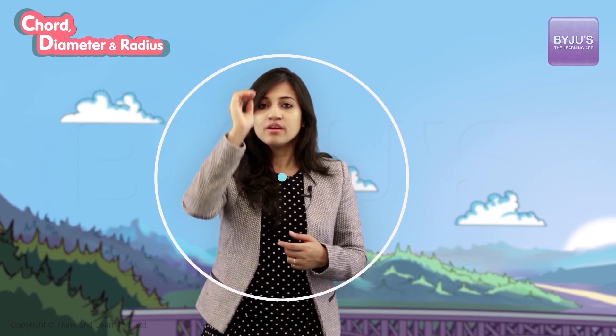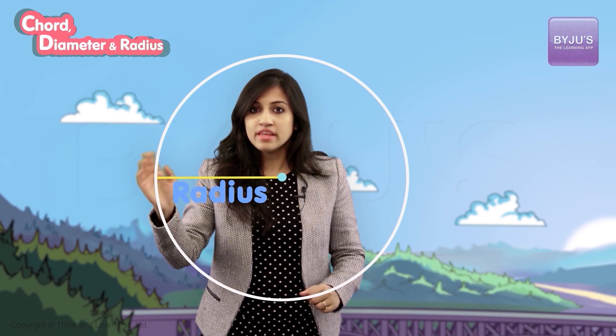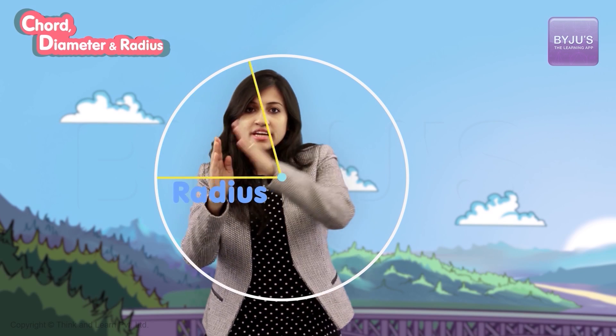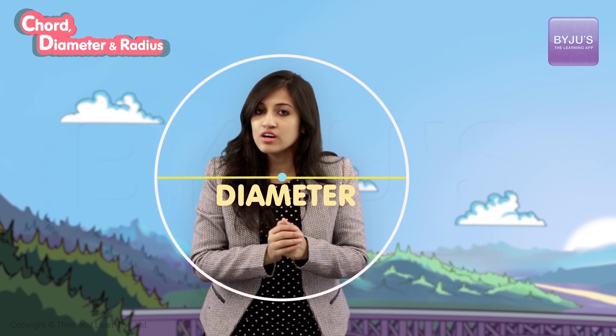How about we summarize everything about the diameter so that it becomes crystal clear. First, we drew a circle. Then we made the diameter. How did we make it? First, we drew the radius. Then we extended the radius to the other side and made a diameter.